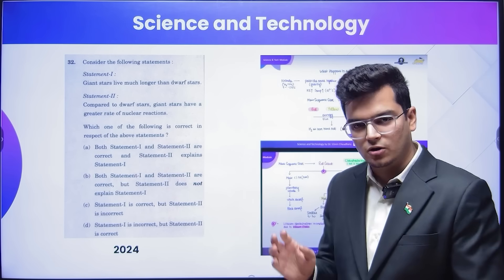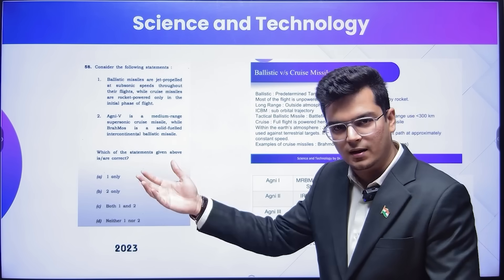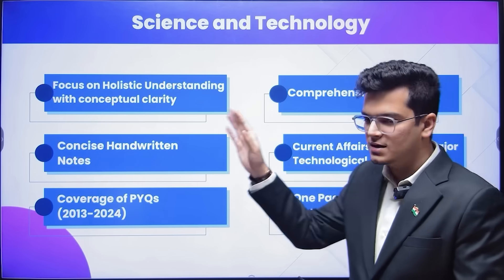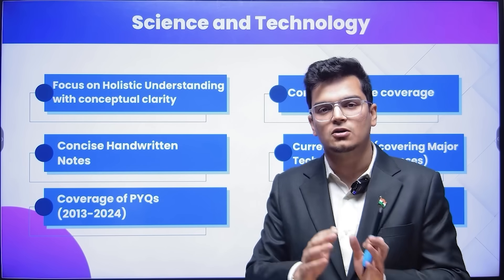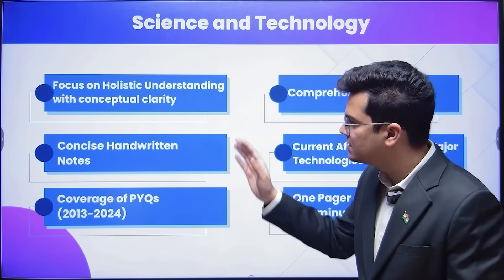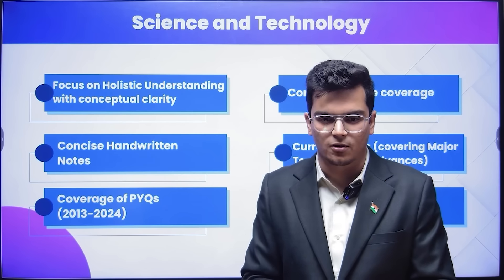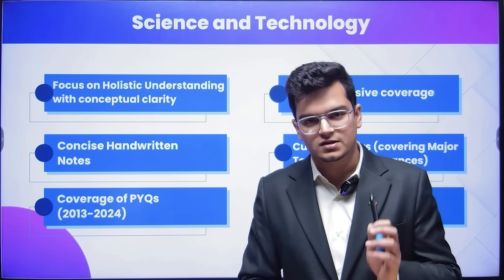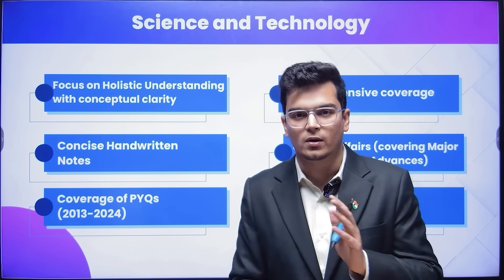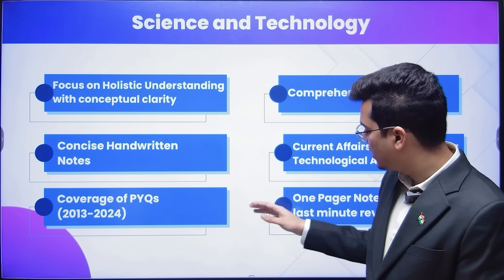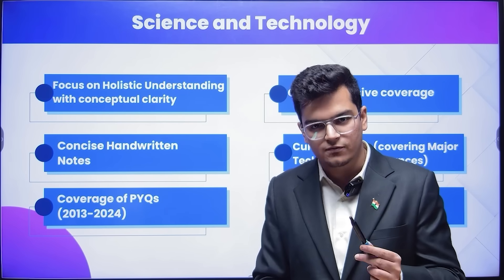There are more examples like this too. Because science and technology is not just current affairs — questions from the same 2023 course appeared in both 2023 and 2024. This simply means we have to understand the concepts. So in science and technology, again, we will do comprehensive coverage from basic to the advanced level — everything needed for prelims. I will stick with handwritten notes for easy reading and clear communication. All relevant current affairs of science and tech from the past three years will be incorporated. You don't have to read anything else — this is the proper one-stop solution. You will also have one-pager notes for last-minute revision, and all PYQs of the last 12 years will be solved in class.